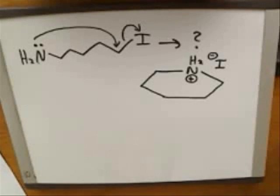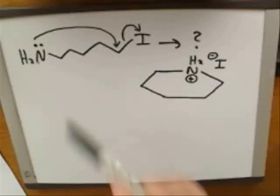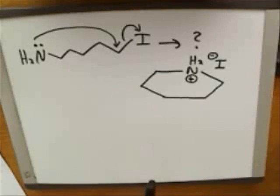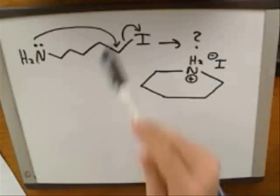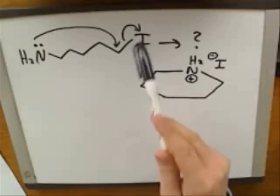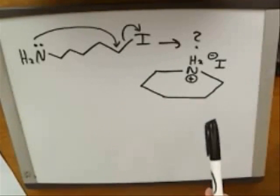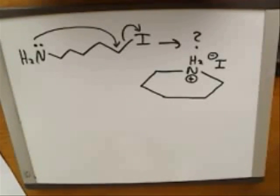That really is the point of this whole series of videos — to explain what electron-pushing arrows really mean, so that once you know what they are, it should be easy and obvious to figure out the correct product. The electron-pushing arrows tell you exactly what the product should be, regardless of whether you've heard of that specific mechanism before.